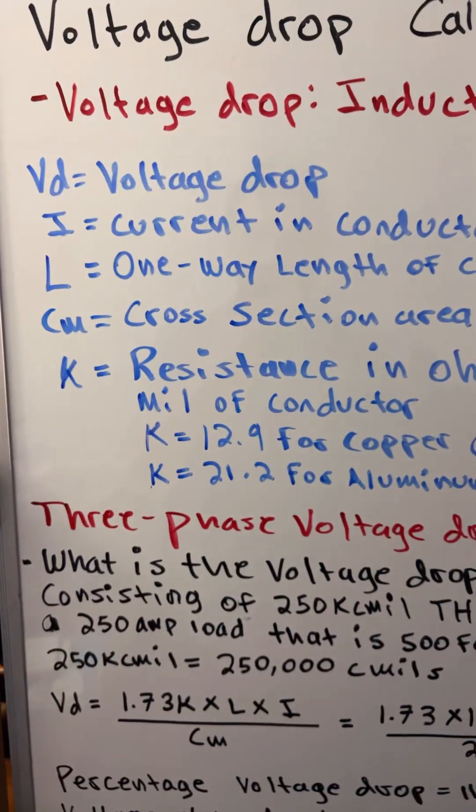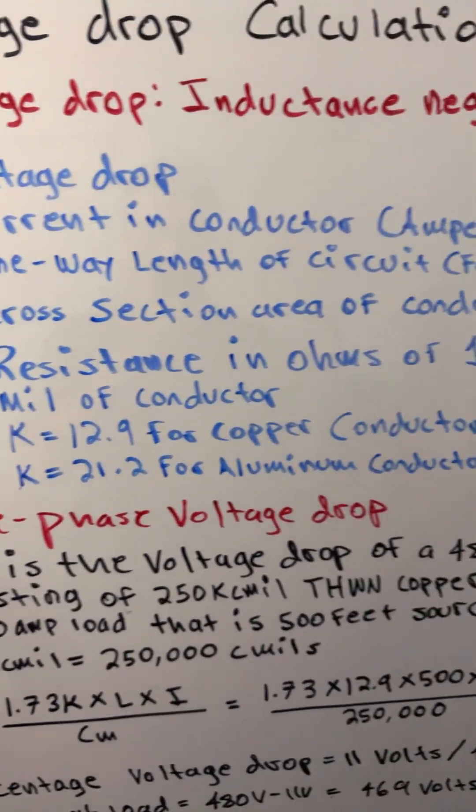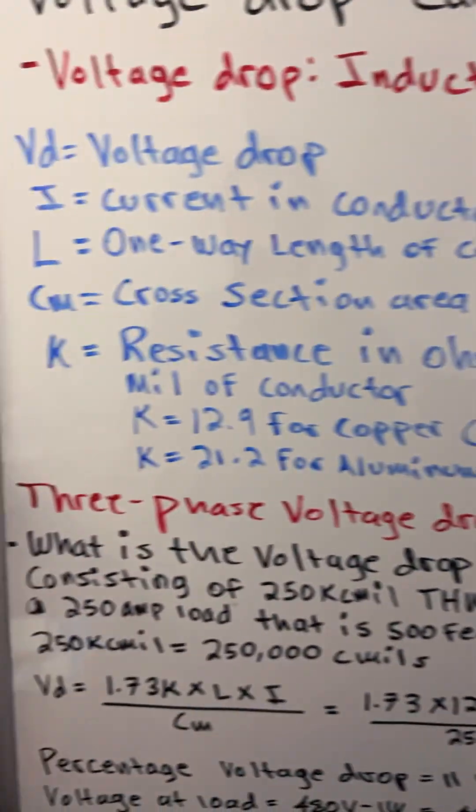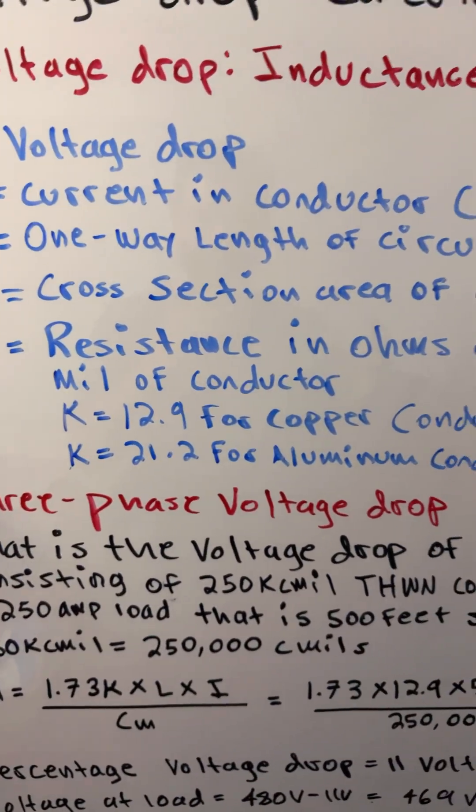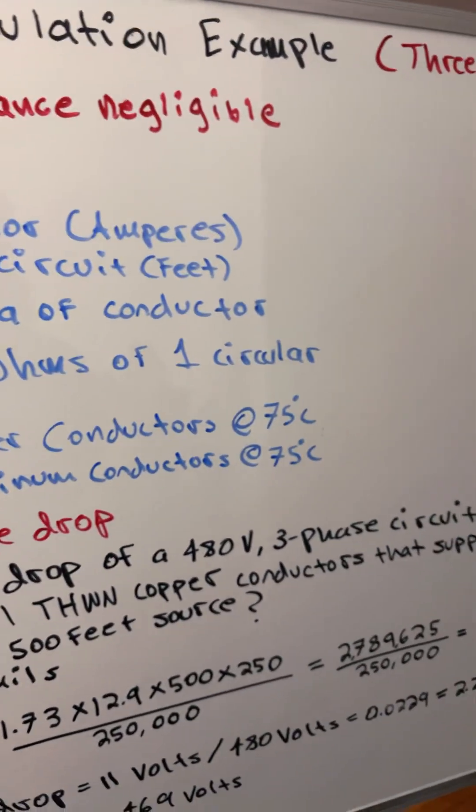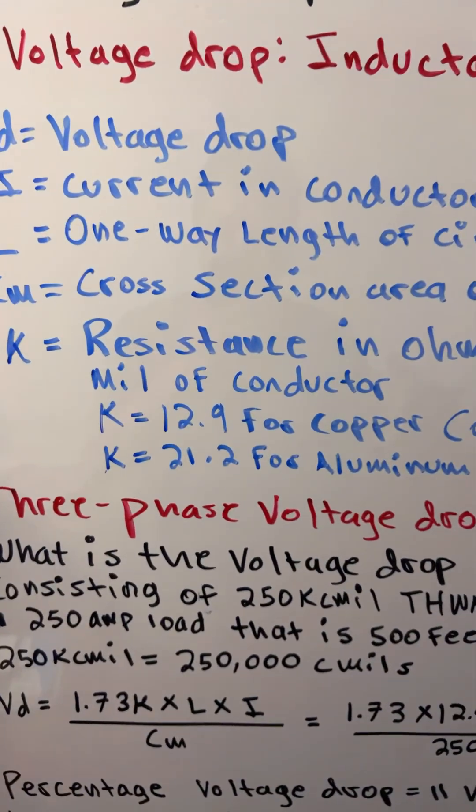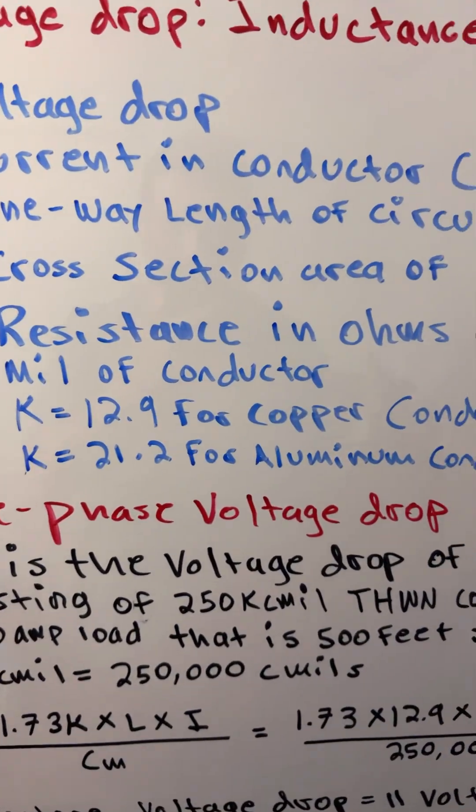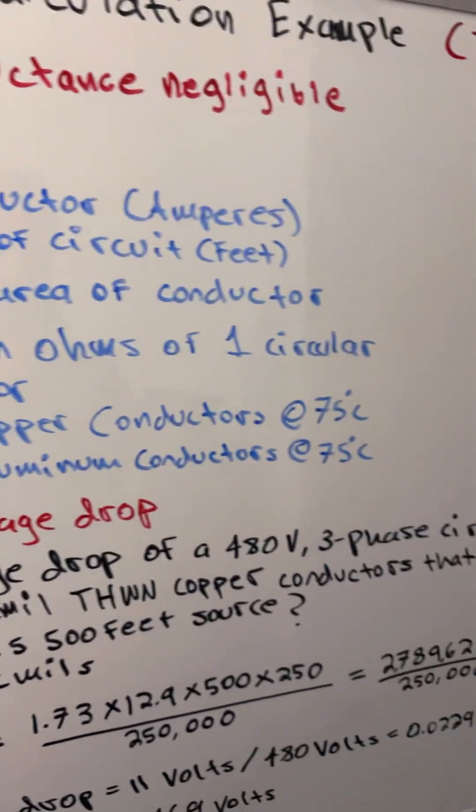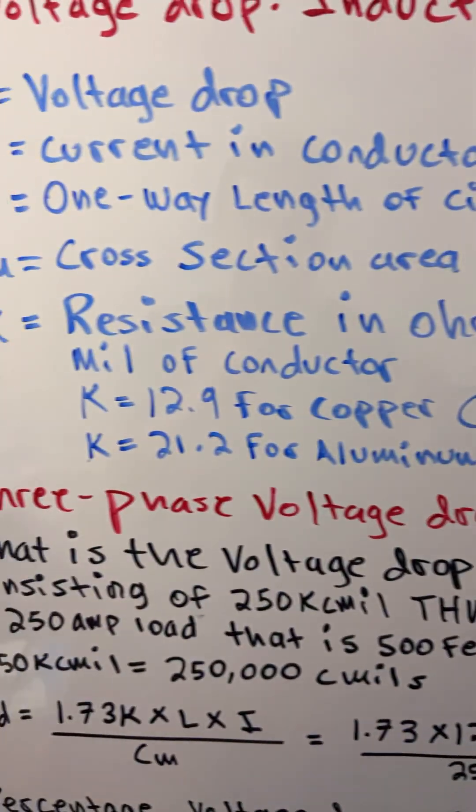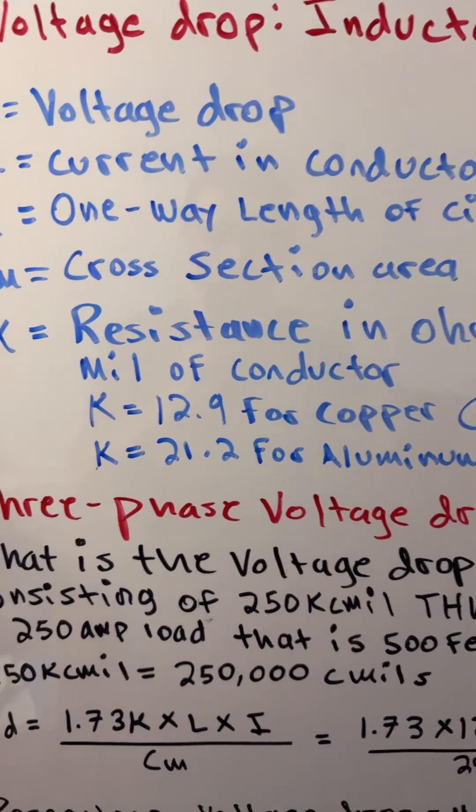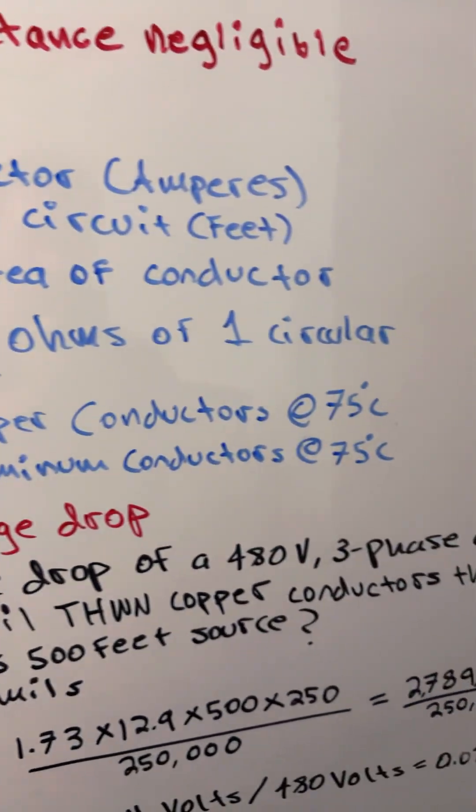in feet, CM is the cross-sectional area of the conductor, and K is the resistance in ohms of one circular mill of conductor. K equals 12.9 for copper conductors at 75 degrees Celsius, K equals 21.2 for aluminum conductors at 75 degrees Celsius.